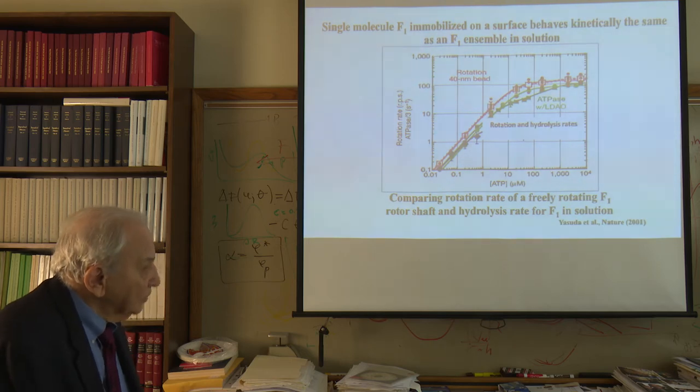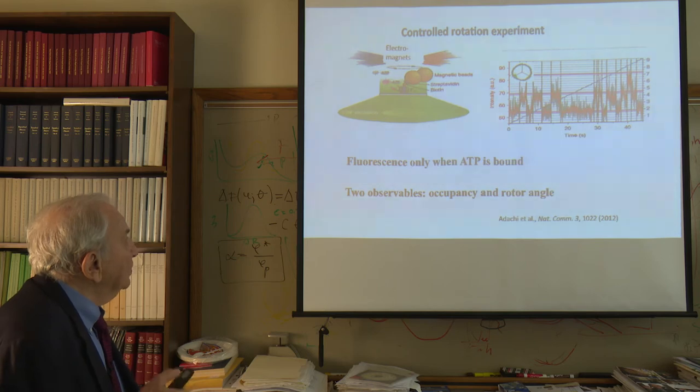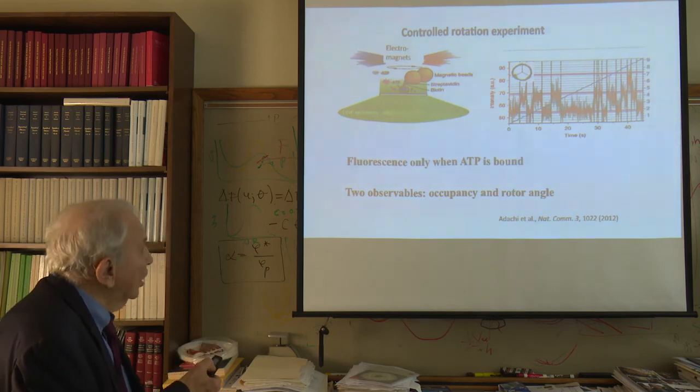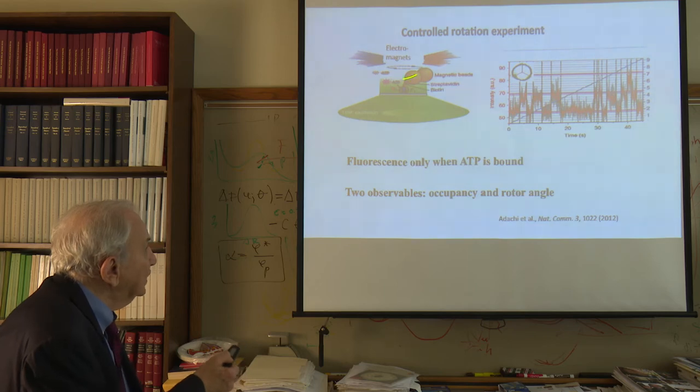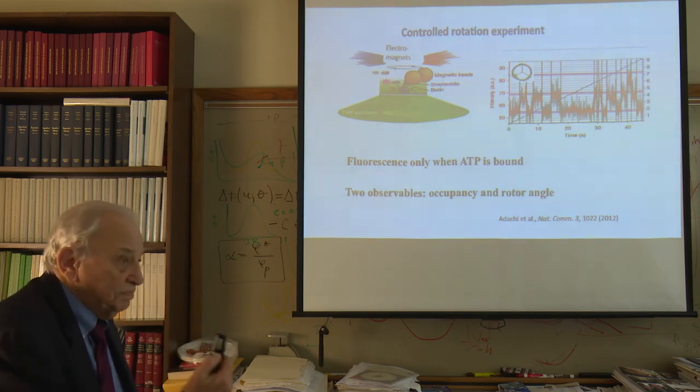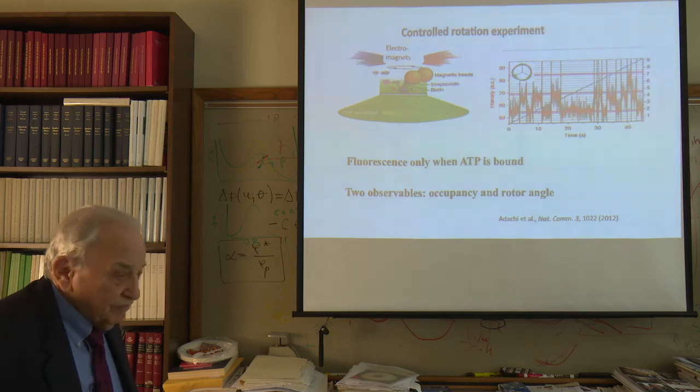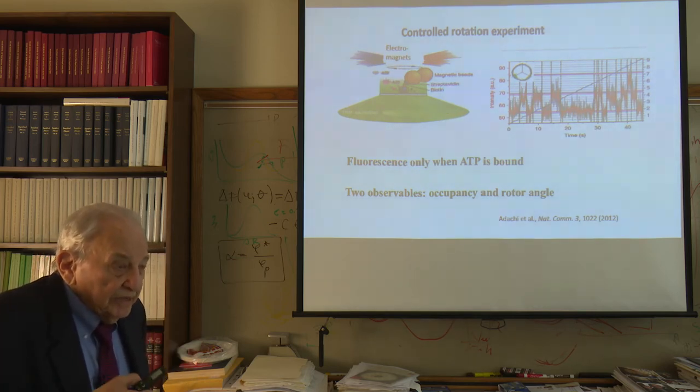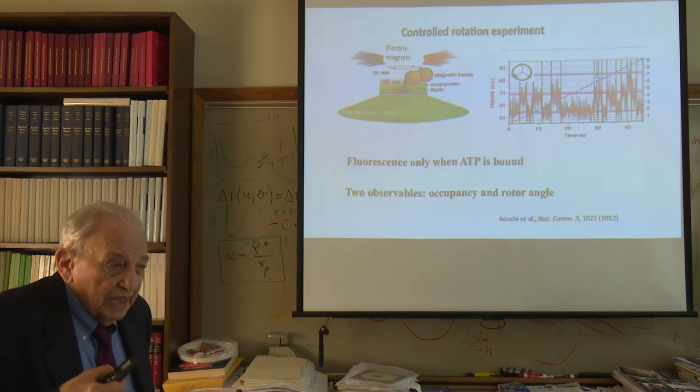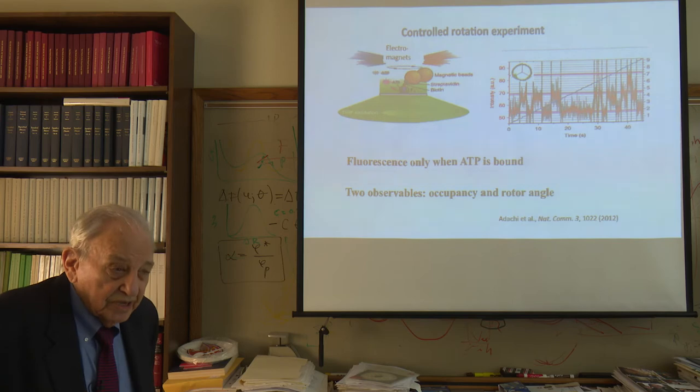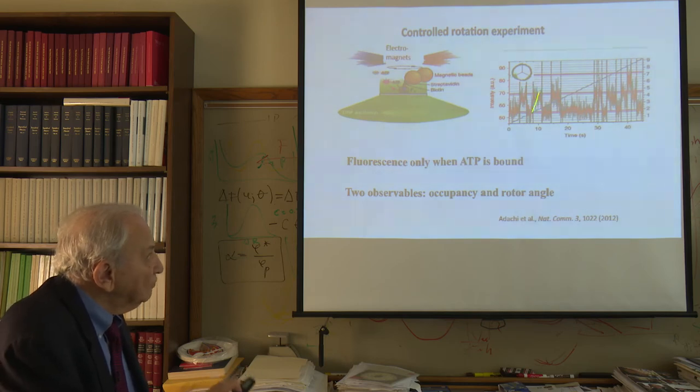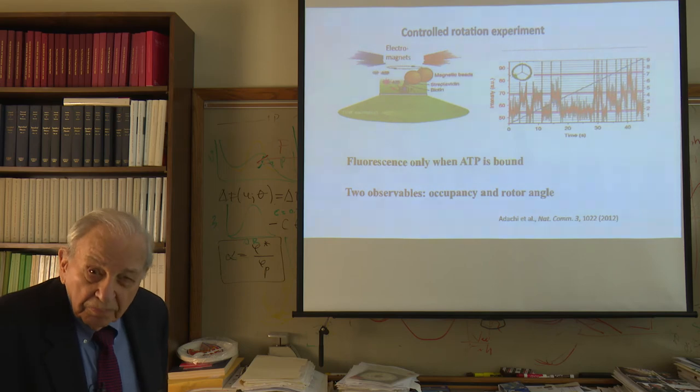Now, here's an example of a controlled rotation experiment where you have a pair of electromagnets causing this magnetic bead to rotate. That magnetic bead is attached to that gamma shaft causing that shaft in the ATPase to rotate. When it rotates, then various things happen. ATP goes in, and if you use a special form of ATP that can fluoresce, a special modified form, then when it's inside, that modified form is bound and it fluoresces. When it's outside, it doesn't fluoresce. So by looking at the fluorescence as a function of time, we'll learn something about the properties of this rotation.